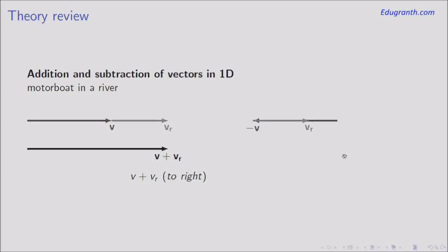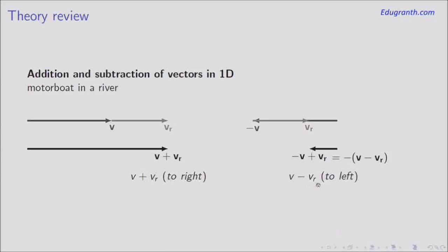If the motorboat changes direction so its velocity is minus V while the river moves with velocity Vr, the resultant is given by joining the initial tail to the final tip. This gives the vector minus V plus Vr, which equals minus (V minus Vr). So the motorboat now moves to the left with a smaller speed V minus Vr. When moving with the flow, the flow speed is added; when moving against the flow, the flow speed is subtracted.